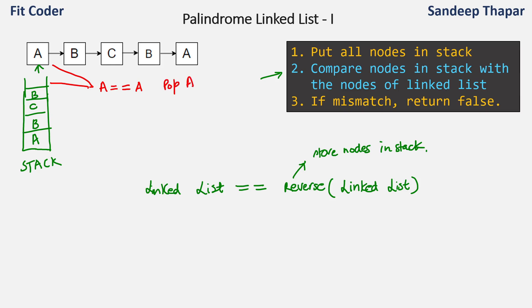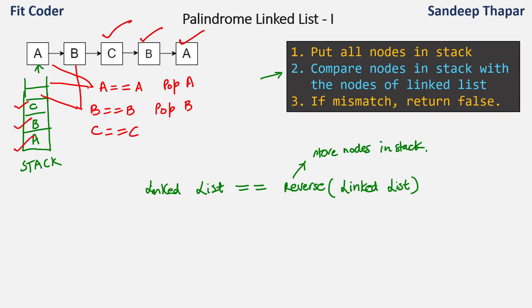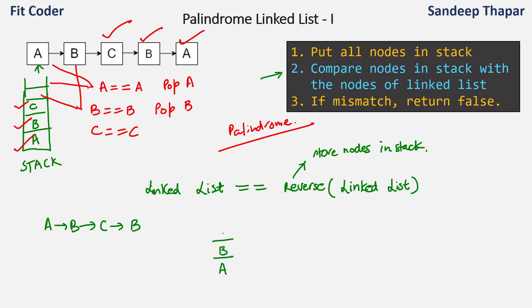So we compare a with a — both are equal, so we pop a. Then we compare b with b — also equal, so we pop b. Then c with c — equal. Then b with b and a with a. Since all nodes match, this linked list is a palindrome. But if there is a mismatch, say the linked list is a, b, c, b — we push all nodes to the stack, then compare the first node a with the top of the stack which is b. These are not equal, so we return false.